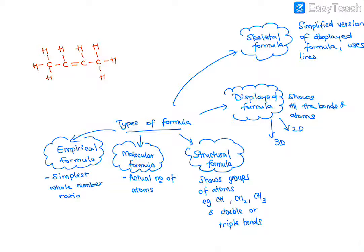So for this molecule, the molecular formula — this is the easiest one for you — shows the actual number of each type of atom. We'll be counting the carbon atoms, so there are four carbon atoms, and we'll be counting the hydrogen atoms, so there are eight hydrogen atoms. So the molecular formula is C4H8.